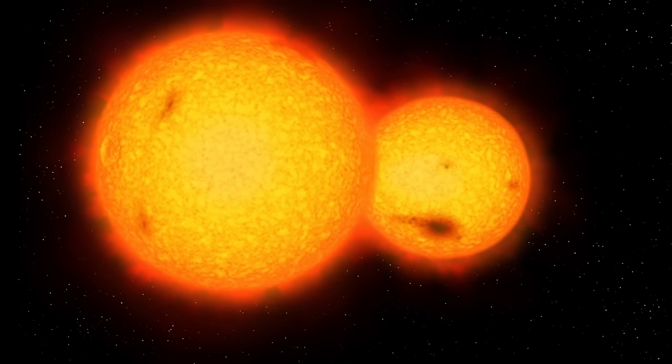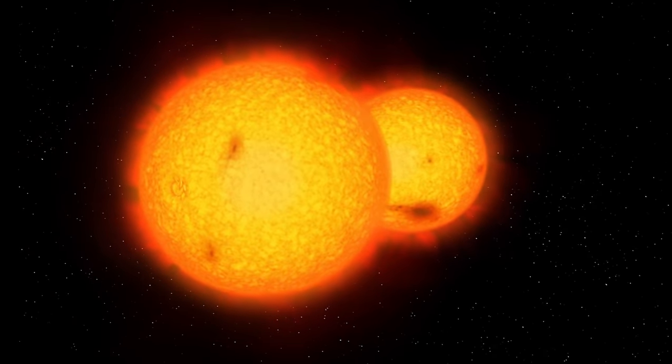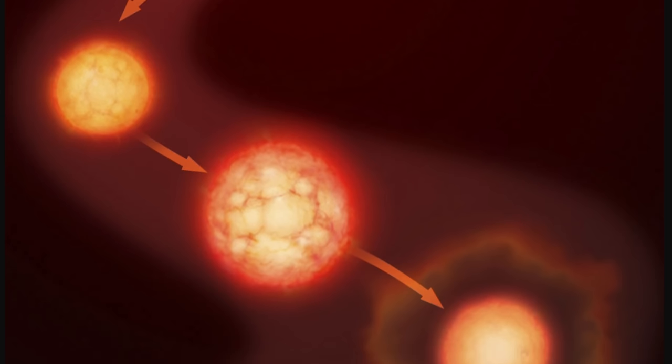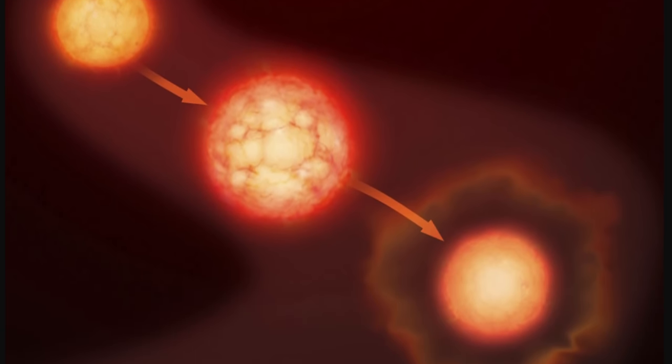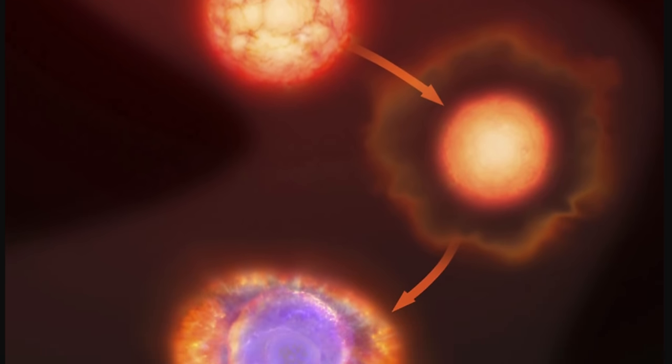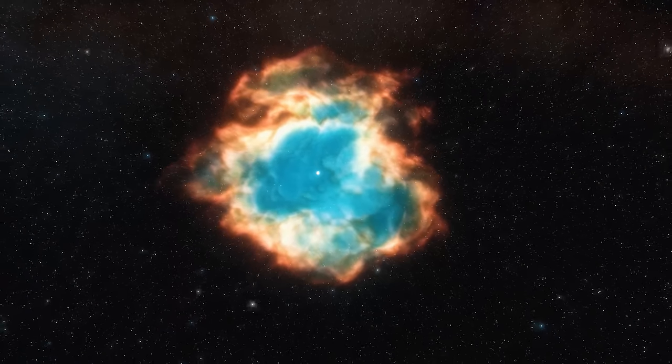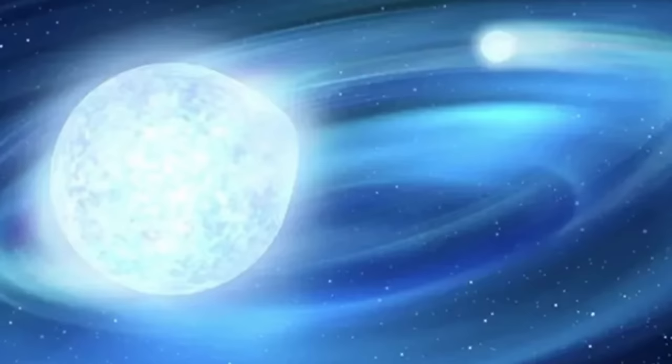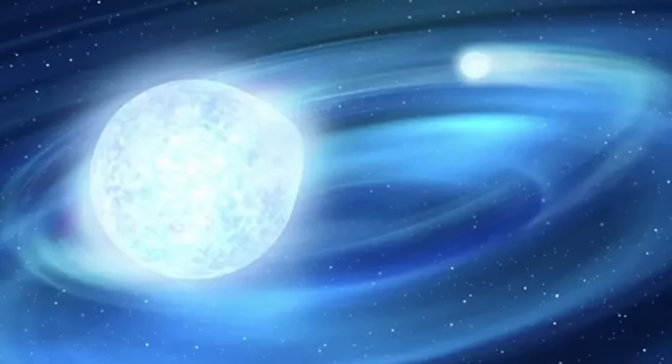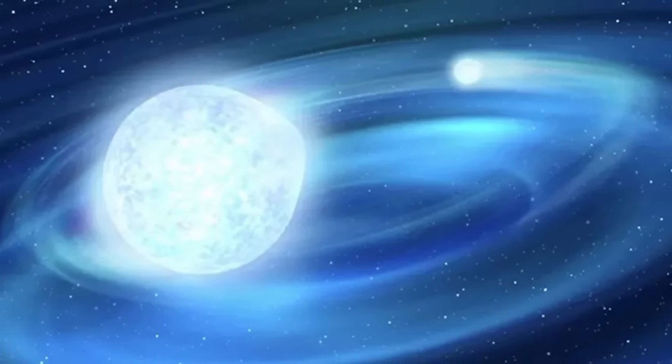But because these are sun-like objects, with time, as they get older and older, one of them will eventually start to expand. So in essence, kind of like our sun, becoming larger and larger in the process, eventually losing its envelope, and then at some point becoming a white dwarf and creating what's known as a planetary nebula. And so because one of the stars here is a white dwarf, we know that this is exactly what happened to that star. So what happened to the other?